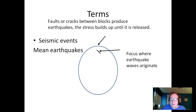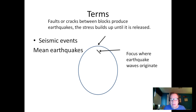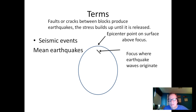Earthquakes are normally a result of faults or cracks between large blocks. Some of you already know about plate tectonics — we're going to be talking about that next week. Basically, what happens is you have two blocks, and stress is built up along them until finally there's a rapid release, and that's what we mean by an earthquake. The point on the surface of the Earth where an earthquake occurs is known as the epicenter. We're going to be using those terms throughout this unit.